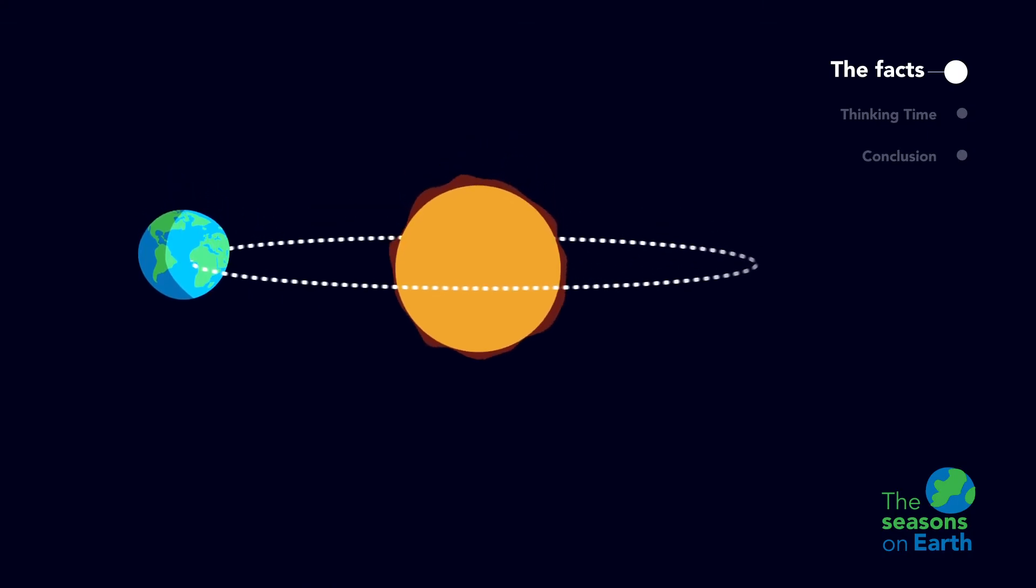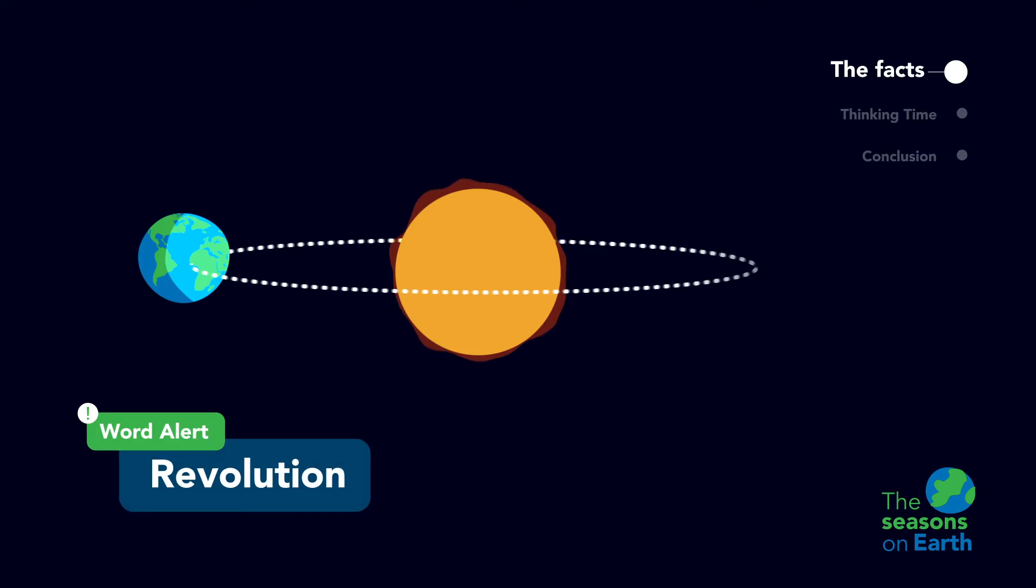To understand the seasons, we have to understand how the earth moves around the sun. There are two terms to remember: revolution and tilt.